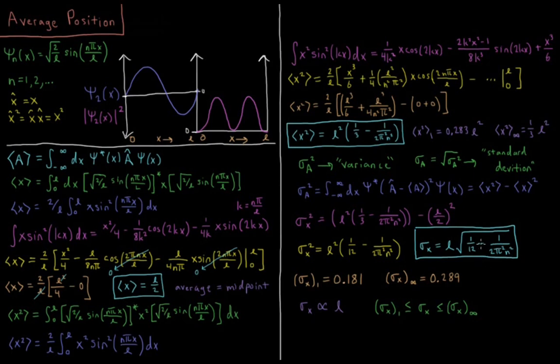Let's look at the values of this. For n equals 1, if you substitute that in there, you get a value of 0.181 times l. And for n equals infinity, you get sigma x of infinity is 0.289 l. So once again, it's going to be steadily increasing, quickly converging from 0.18 all the way to the value of about 0.29.